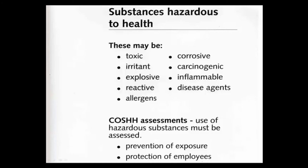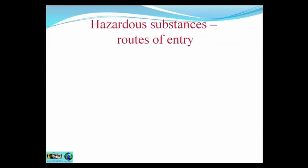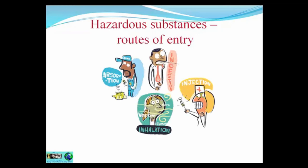How do the substances get into the body? There are four routes of entry. They are ingestion — through swallowing — injection through cuts or injuries, inhalation, and absorption. And the most common route of entry is inhalation.